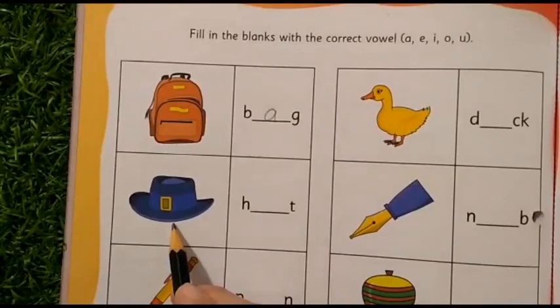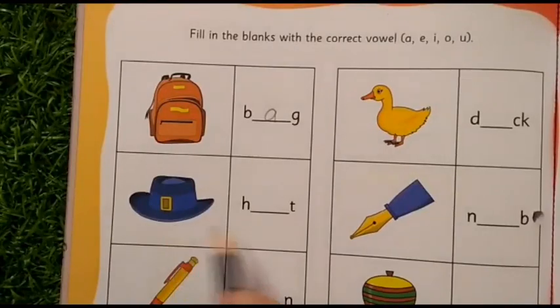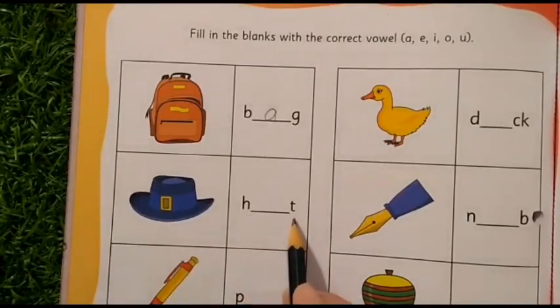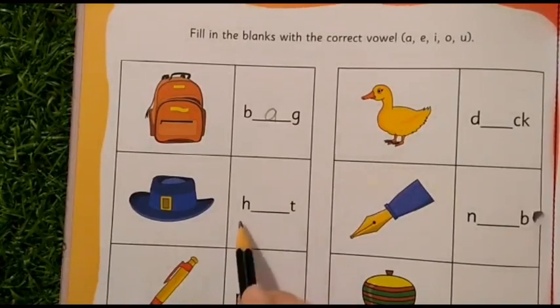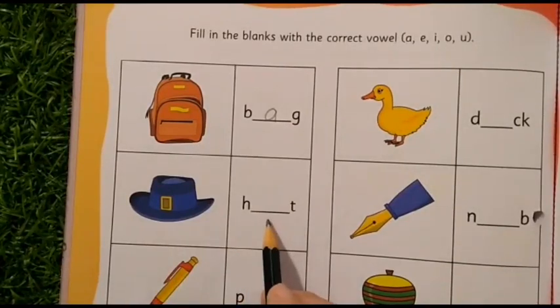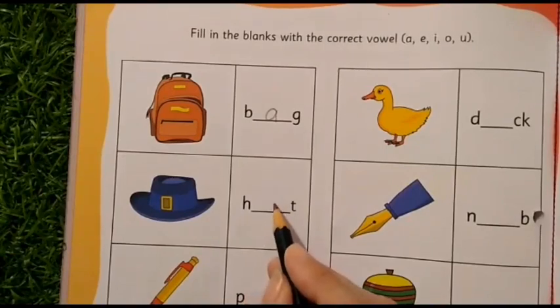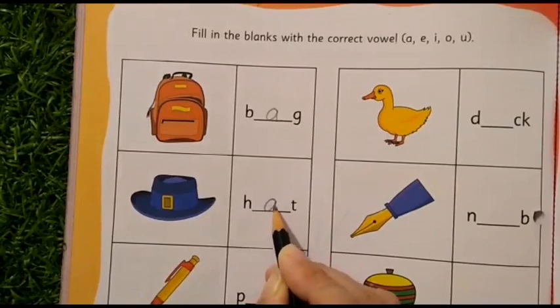What is this? This is the picture of a hat. Hat. H is given and T is given. So, which sound will come here? Hat. Eh. So, which letter? Again, letter A will come here.